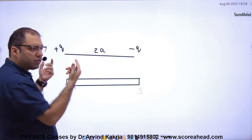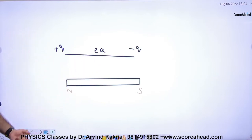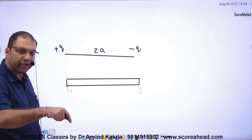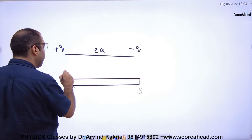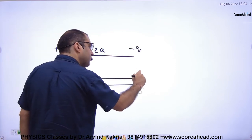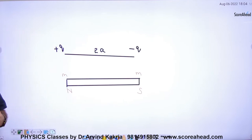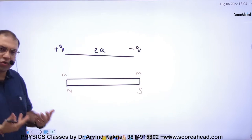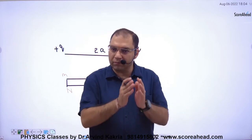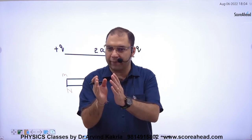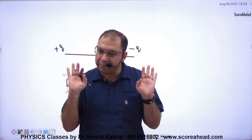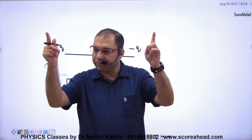The magnet's poles are north and south. Pole strength is a term that tells us how strong the pole is. Think of the pole strength as small m. The pole strength is the same for north and south. The stronger the pole strength, the stronger the pole and the magnet. So, just as charge Q is used in electric dipole, the charge of the magnetic dipole is small m. The place of Q is small m.